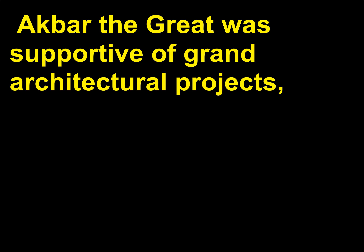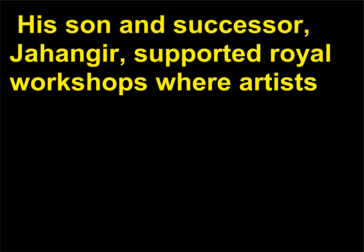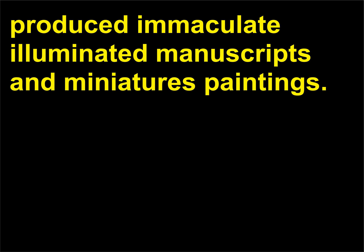Akbar the Great was supportive of grand architectural projects, and was particularly fond of European etchings brought to him by Christian missionaries. His son and successor, Jahangir, supported royal workshops where artists produced immaculate illuminated manuscripts and miniature paintings.